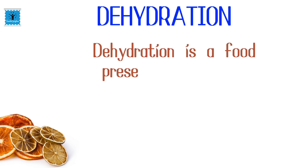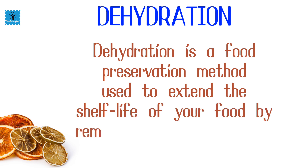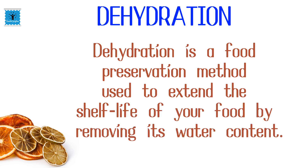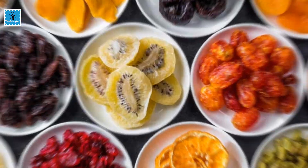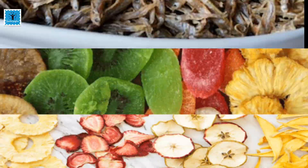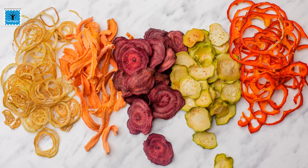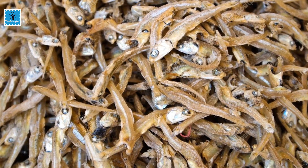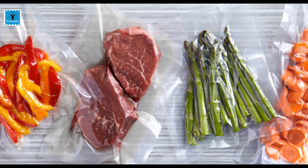Another method of food preservation is dehydration. Dehydration is the process of removing moisture from food material in order to preserve it. It is the simplest method and prevents food spoilage by removing water, which inhibits the growth of microorganisms. Dehydration is one of the oldest and most popularly used methods, and it is used to preserve fruits, vegetables, fish, and meat.